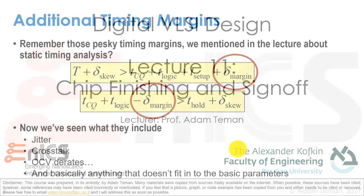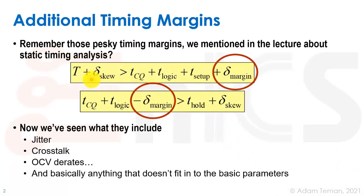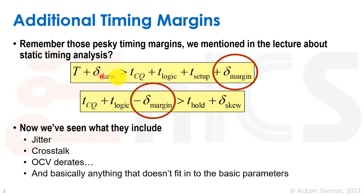Let's go back to the lecture and take a look at why. Our timing constraints — the max delay constraint and the min delay constraint — in the vanilla form say that the period is greater than t_cq plus t_logic plus t_setup. We added delta skew, which is the difference in clock arrival time at the start and endpoint flip-flops, and then this delta margin that accounts for all kinds of additional effects.